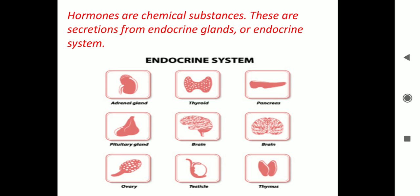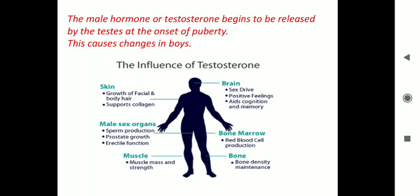A picture is given showing the different types of endocrine glands — together these make up the endocrine system. As you can see in the picture, testosterone begins to be released by the testes at the onset of puberty and causes these types of changes in the body of a male.